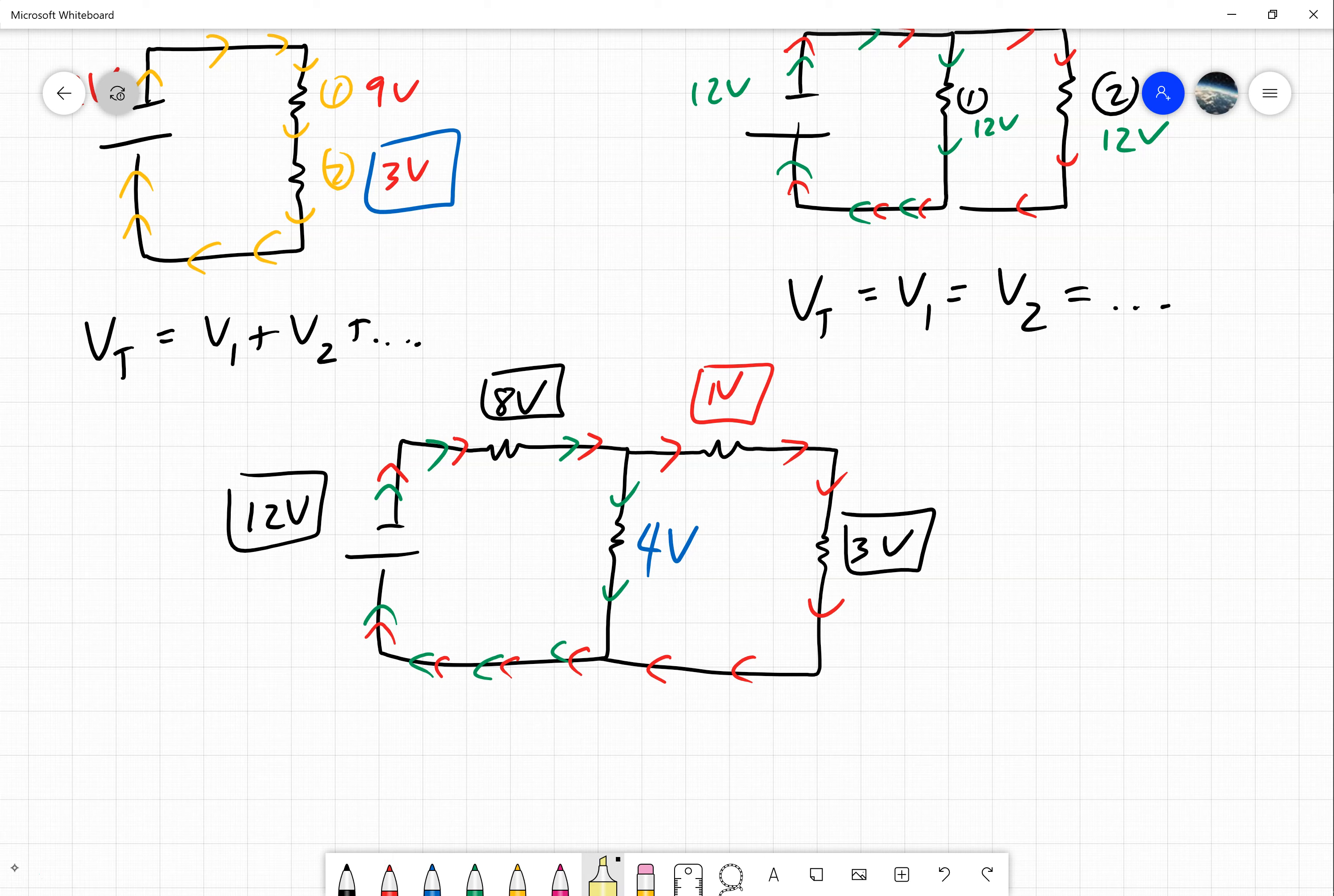Now if we think about our parallel rules, we can show that it's a parallel circuit between these two spots I've highlighted. If you follow the green pathway down, it's 4 volts. If you follow the red pathway around, it's also 4 volts.